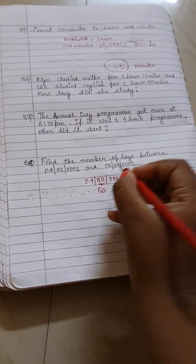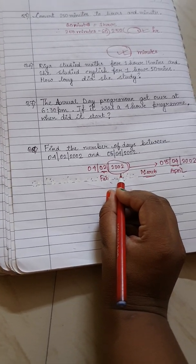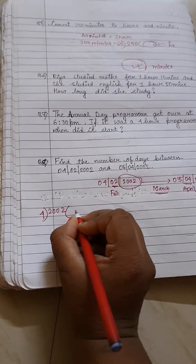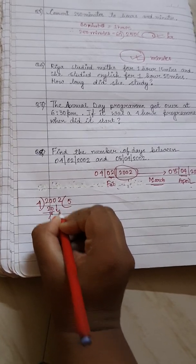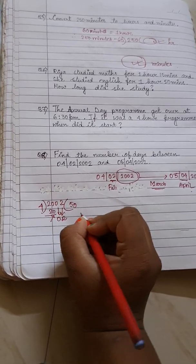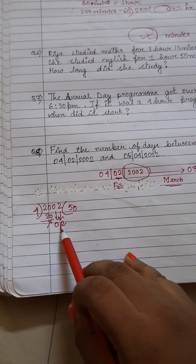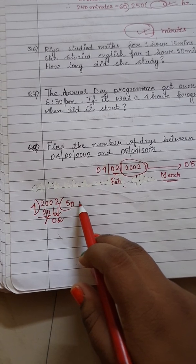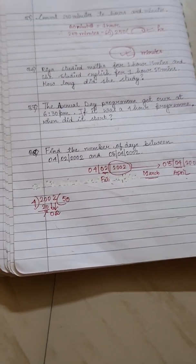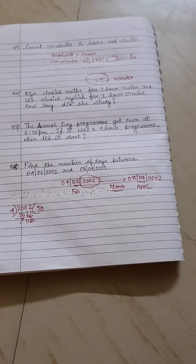First we have to find out whether 2002 is a leap year or not. To do that, we divide 2002 by 4. When we do the division — 4 fives are 20, bring down 0, bring down 2 — we get a remainder of 2. Since the remainder is not 0, 2002 is not a leap year. That means February has only 28 days.